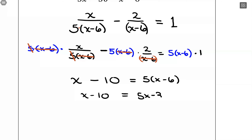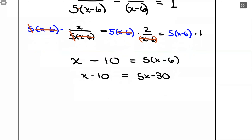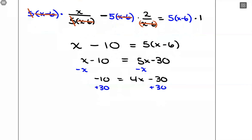This is linear, so I need the variable on one side and the constant term on the other. Moving pieces around, we end up with 20 equals 4x. Dividing both sides by 4, we get x equals 5.